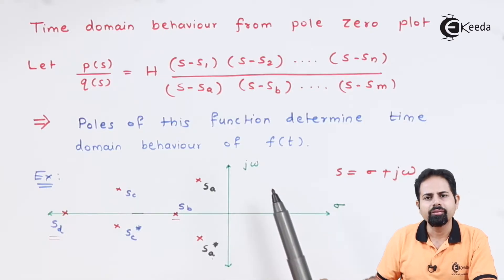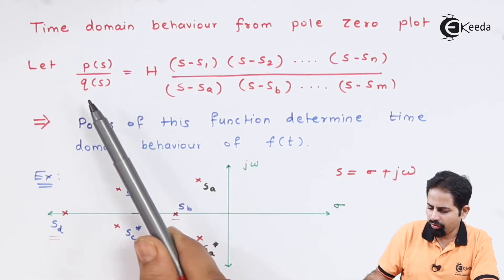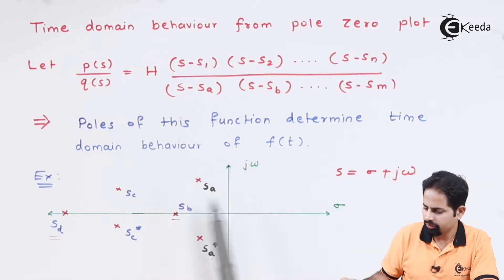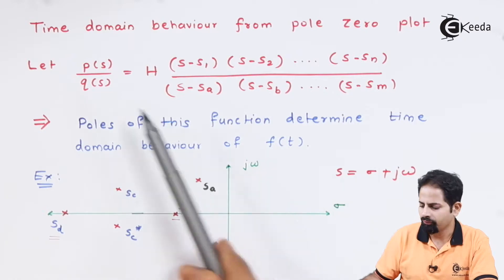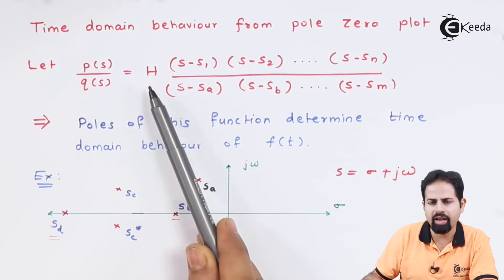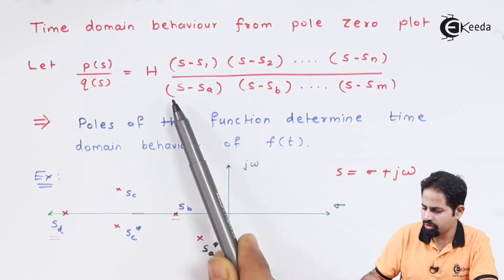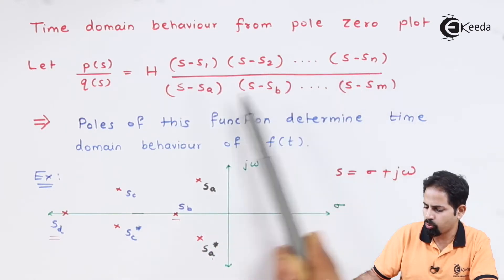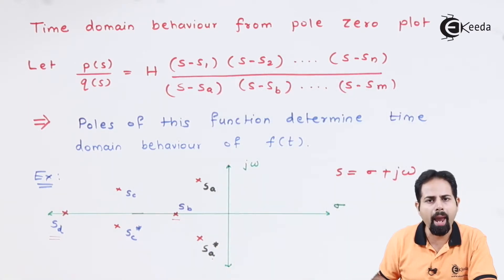Here you can see I have drawn a function which is a network function and its pole zero plot. The network function is given by this equation, H is the scaling factor and these are all the roots: s minus s1, s2, up to sn, and up to sm.